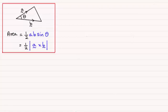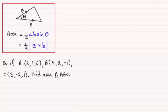Now I'll give you an example. Let's suppose we've got A having coordinates (2,1,5), B having coordinates (4,2,-1), and C having coordinates (3,-2,1), and we've got to find the area of the triangle ABC.